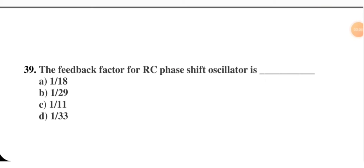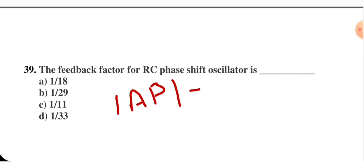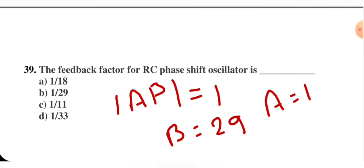The feedback factor for an RC phase shift oscillator is — 1/18, 1/29, 1/11, or 1/33? For the RC phase shift oscillator, A·β = 1, and the value of β is 1/29, so A = 29. Therefore the feedback factor β = 1/29, and option B is the right option.